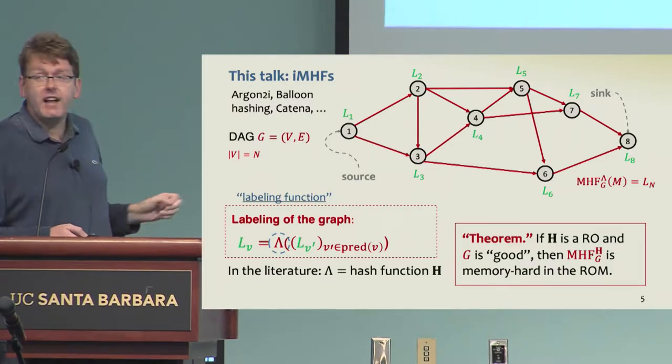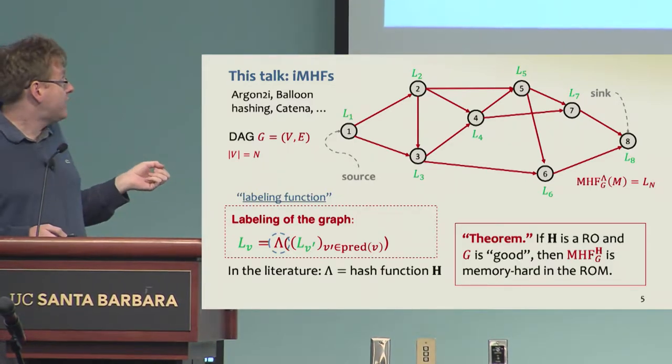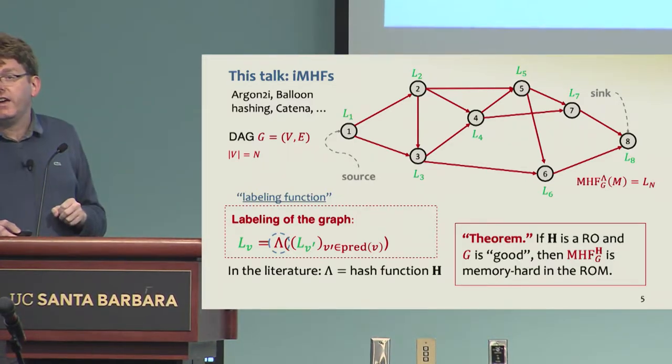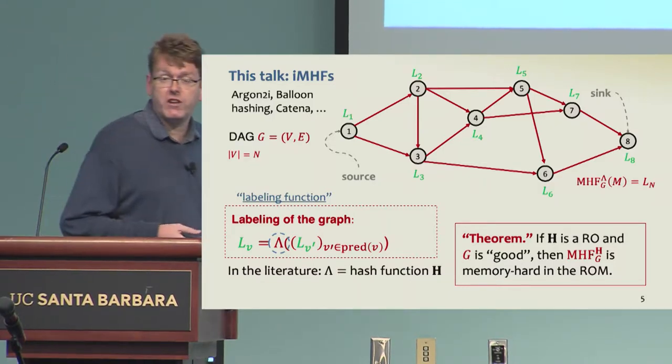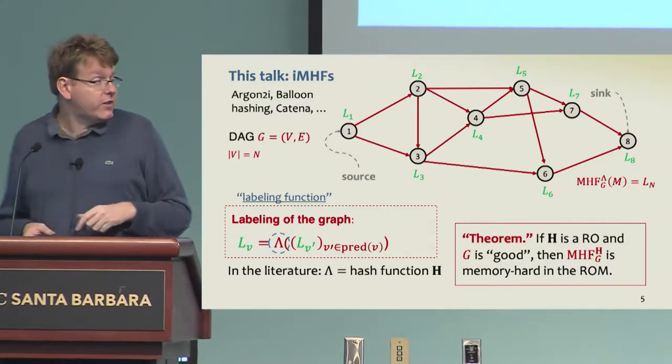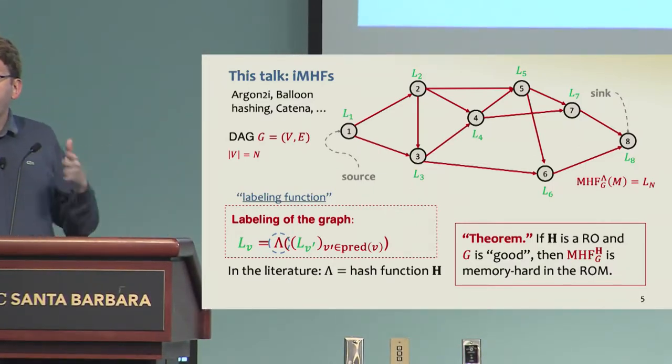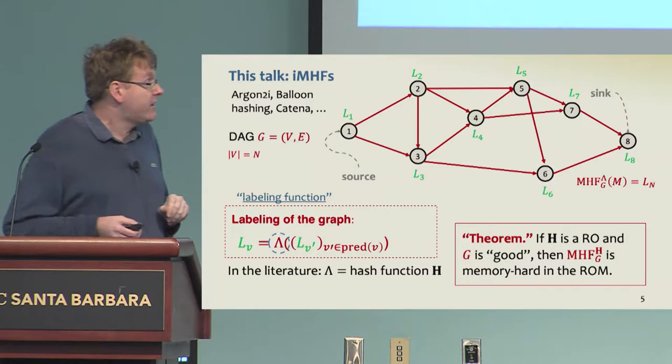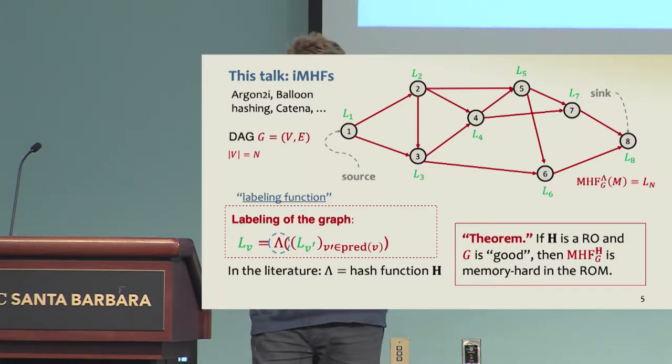In all of this analysis I mentioned before, the labeling function is a monolithic hash function, which in security proofs is modeled as a random oracle. A meta theorem here will tell you that if the graph has some good combinatorial property, then the function is memory hard in the random oracle model.